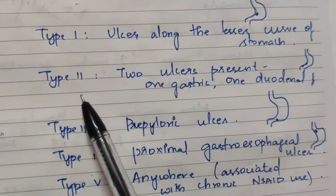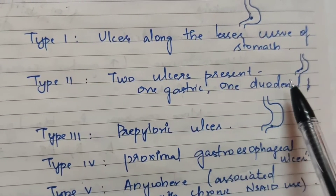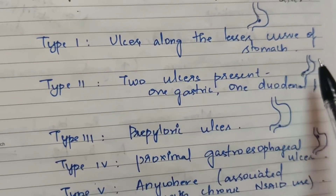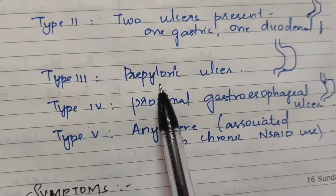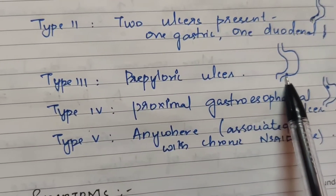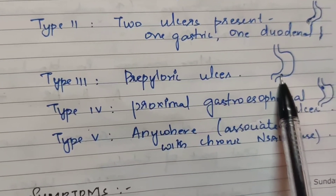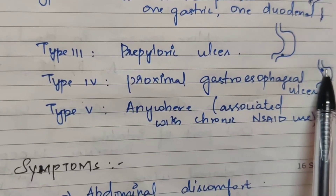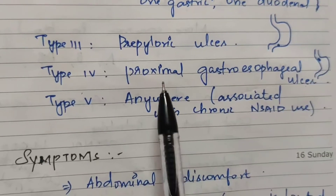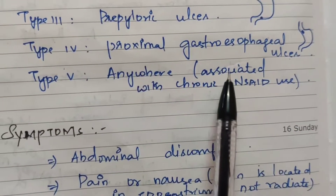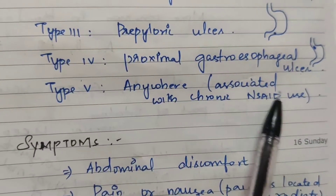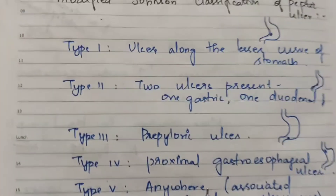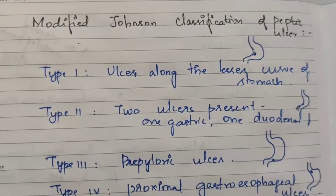In the Modified Johnson Classification: Type 1 is a gastric ulcer; Type 2 involves both the gastric region and the pylorus; Type 3 is a pre-pyloric ulcer in the pylorus region; Type 4 is a proximal gastroesophageal ulcer involving the gastric and esophagus regions; Type 5 can occur anywhere and is associated with chronic NSAID use. This is the Modified Johnson Classification of peptic ulcers — an important viva question.